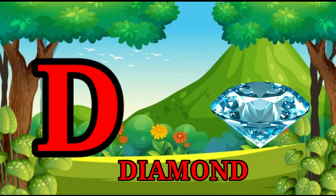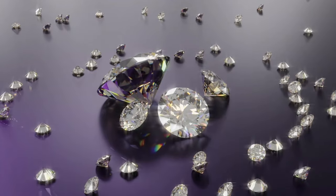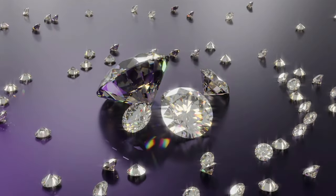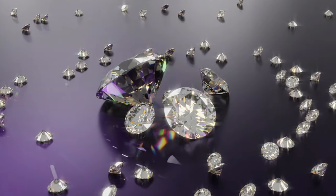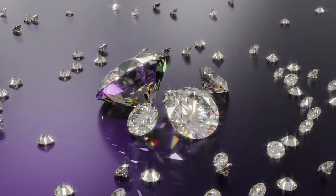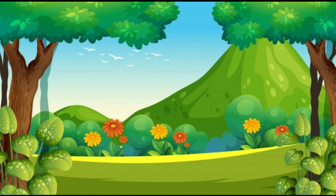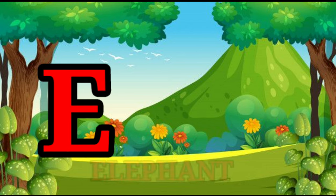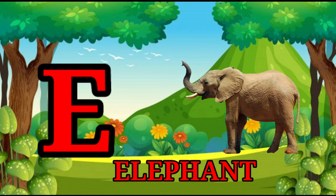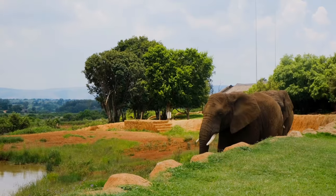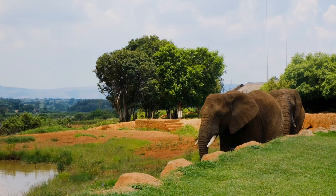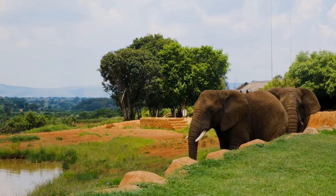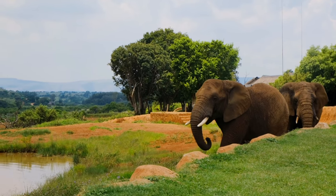D is for diamond. Diamond, diamond, diamond. E is for elephant. Elephant, elephant.